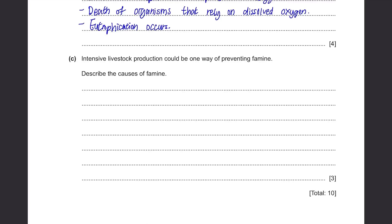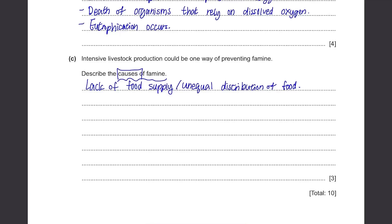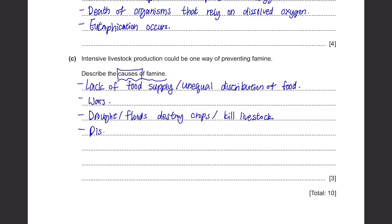Part C: Intensive livestock production can be one way of preventing famine. Describe the causes of famine. Famine means there's not enough food. One cause is lack of food supply or unequal distribution of food — in some parts of the world people have too much food, while in other parts there's a lack. There can be many reasons: because of wars, there will be no source of food. Natural disasters like droughts or floods can kill all the crops and livestock. There can be diseases in animals, so they won't be consumable anymore. And lastly, it's due to poverty, so some people cannot afford to buy food.